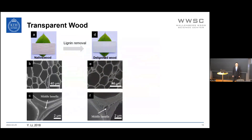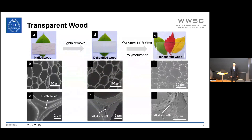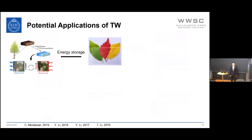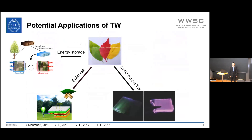In the next step, a refractive-index-matched monomer is infiltrated in order to decrease light scattering. After this step, the cell lumen and middle lamella are filled with polymer. Transparent wood has shown huge potential in various applications, such as energy storage, solar cells, luminescent transparent wood for LEDs, and light diffusers for buildings.